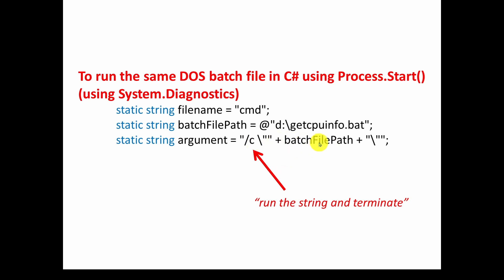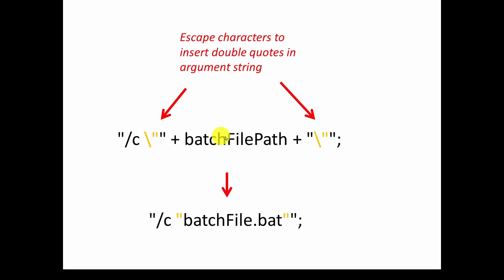The argument formatting is one of the challenges — you have to get the right formatting. We have the batch file path and the /C, but then we've got escape characters. The point is to tell the argument to insert a double quote before and after the batch file path. If you didn't have the escape character, it would get confused — it would see a starting double quote and then two ending double quotes and not know what to do. So we escape the double quote to insert one before and one after, resulting in /C followed by the batch file path in double quotes.